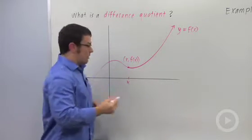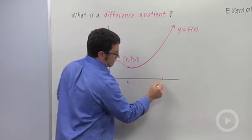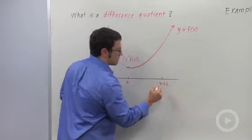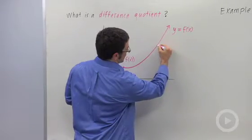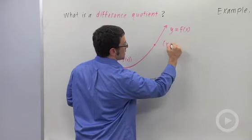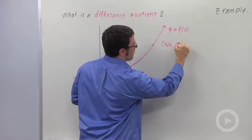And let's say we pick another point, maybe a little to the right, say h units to the right, and call it x plus h. Then the coordinates of the point with this x coordinate are going to be x plus h, f of x plus h.